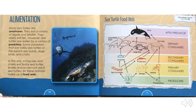Alimentation. Many sea turtles are omnivores. They eat a variety of algae and jellyfish. They rarely eat fish. However, sea turtles are eaten by a variety of predators. Some predators that eat baby sea turtles on the beach are lizards, dogs, birds, and crabs. In the sea, octopuses and sharks eat baby sea turtles. Sharks and orcas hunt adult sea turtles. All these animals make up a food web.